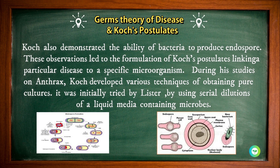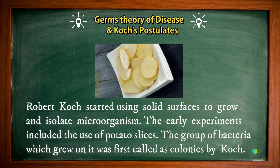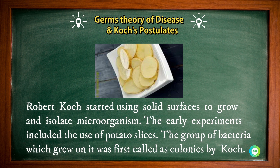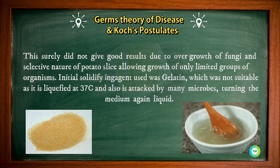Pure culture techniques were initially attempted by Lister using serial dilutions of a liquid medium containing microbes. Robert Koch then started using solid surfaces to grow and isolate microorganisms. Early experiments included the use of potato slices, and the groups of bacteria that grew on them were first called colonies by Koch. However, this did not give good results due to the overgrowth of fungi and the selective nature of the potato slice, which allowed only a limited number of organisms to grow.